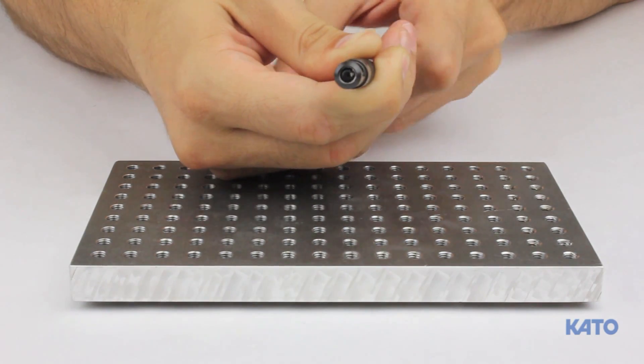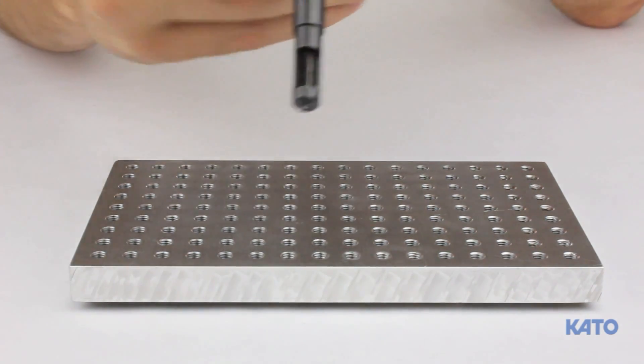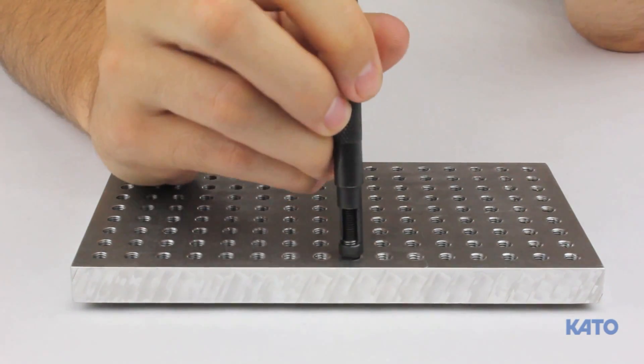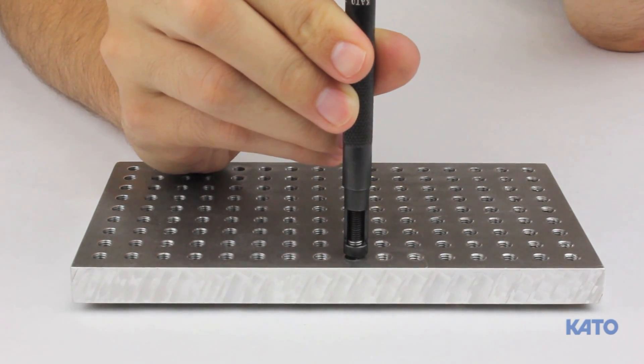Once the mandrel starts to exit the pre-winder, hold the tool perpendicular to the hole so that it is straight. Avoid holding it at an angle and avoid wobbling during installation. This could cause the installation to fail and may damage the installation tool.